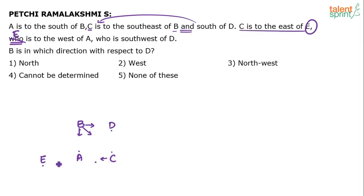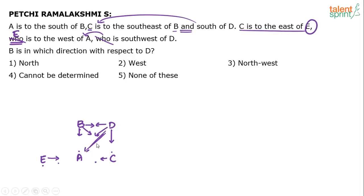A is to the southwest of D. This is south of D, this is west of D, and A is between south and west — so southwest. All conditions are satisfied. Now, the question: B is in which direction with respect to D? B and D appear to be in the same straight line, and B looks to be to the west of D.